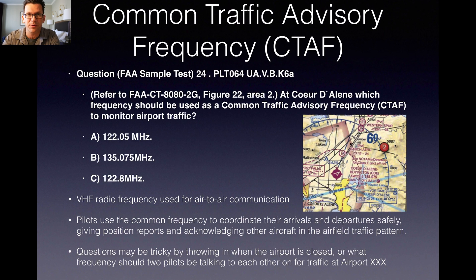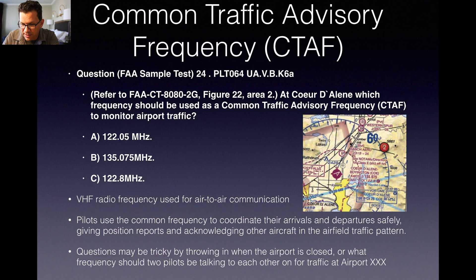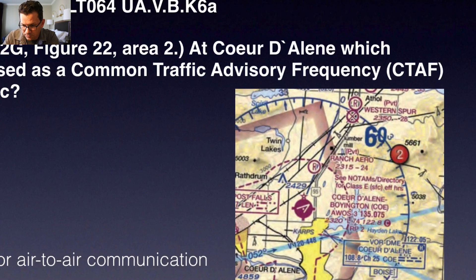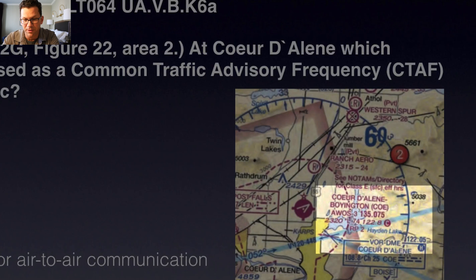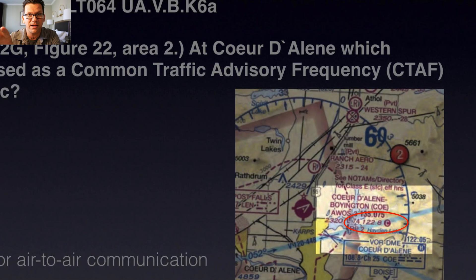CTAF, or common traffic advisory frequency — there's one way they'll try and trip up this question. Question number 24 on the FAA sample test says: refer to figure 22, area 2, at Coeur d'Alene — which frequency should be used as a common traffic advisory frequency to monitor airport traffic? The way you identify this is right here. You'll see in Coeur d'Alene that you've got your AWOS — automated weather station — dash three, that's 135.075. But down below that you'll see 122.8 with the shaded C there. That is the CTAF frequency — it's 122.8.